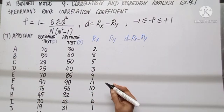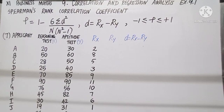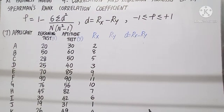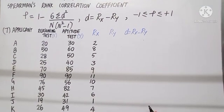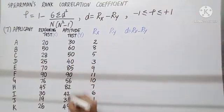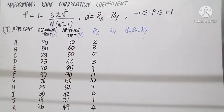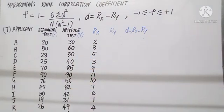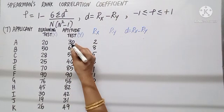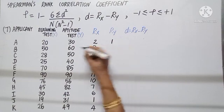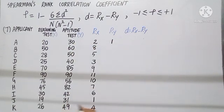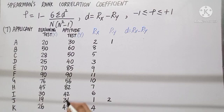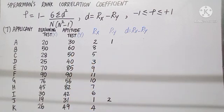In the same way, let us give the ranks for Y values. Out of all the values, the least number is 30 — that gets rank 1. The next number is 31, which gets rank 2. Let us proceed in the same way and allot all the ranks.